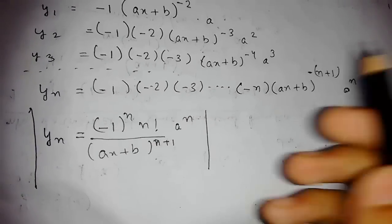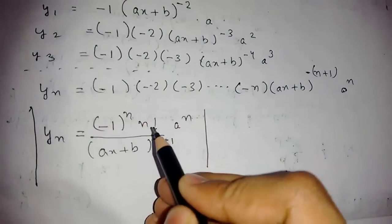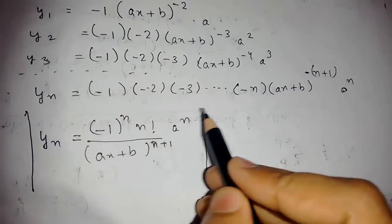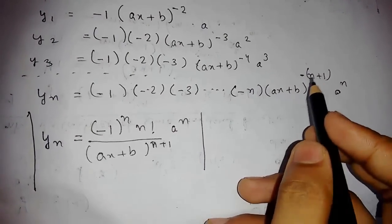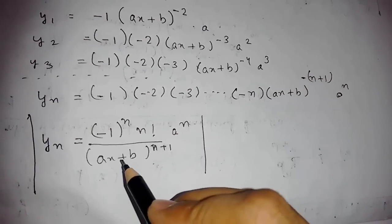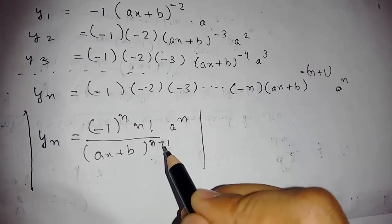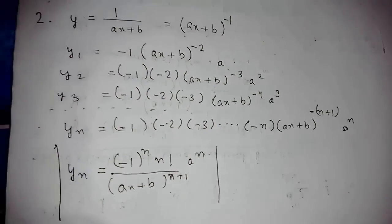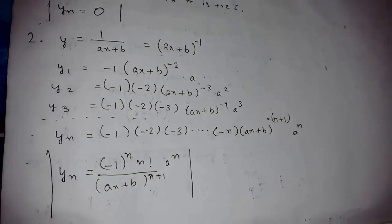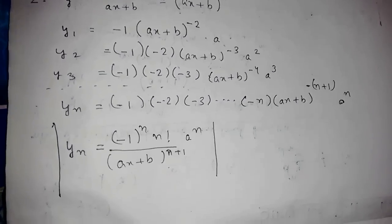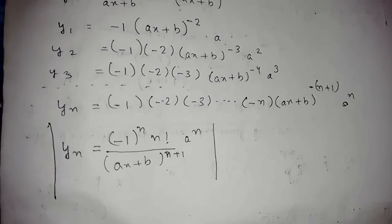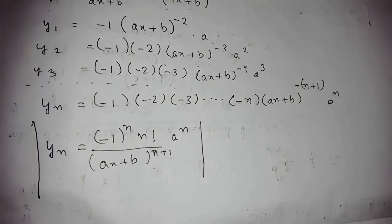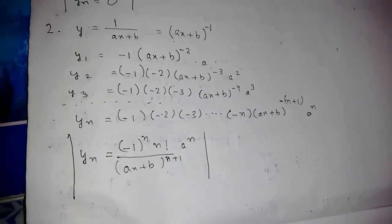Simplifying this, our general formula comes out to be yₙ = (−1)ⁿ · n! / (ax+b)^(n+1) · aⁿ. If you have any problems comment below, and if you did like my video hit the thumbs up button and subscribe to my channel for more videos. Thank you.